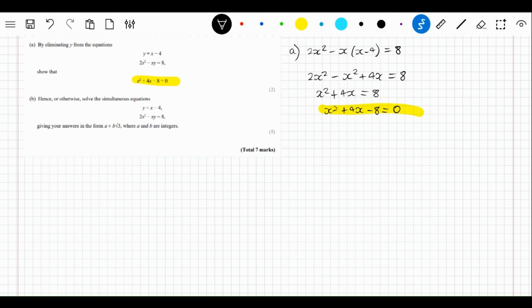Now we're going to move on to part b, which says 'hence or otherwise solve the simultaneous equations.' That normally means when it says 'hence' we use the answer from part a to help us with part b. Now we've got this, we can sub it into our calculator or factorize it.